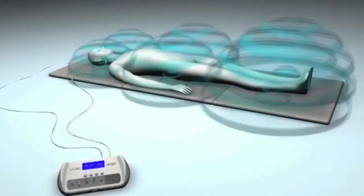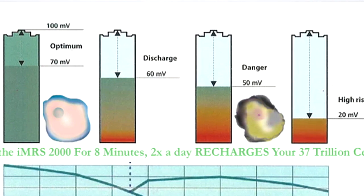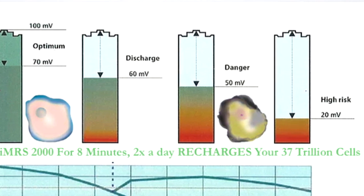Now here's an interesting aside. Voltage in PMF and voltage in cells. Almost all chronic diseases are characterized by a low cellular voltage.